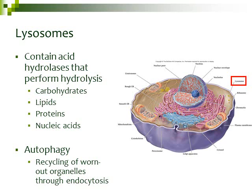Some of the vesicles coming out of the Golgi apparatus, after all that processing, are going to become lysosomes. Lysosomes contain a specific enzyme called an acid hydrolase enzyme. This enzyme performs hydrolysis — which is how we break down carbohydrates, lipids, proteins, and nucleic acids. Materials such as carbohydrates enter into the lysosome, and then the enzyme breaks them back down into their monomers — recycling these large biological molecules.